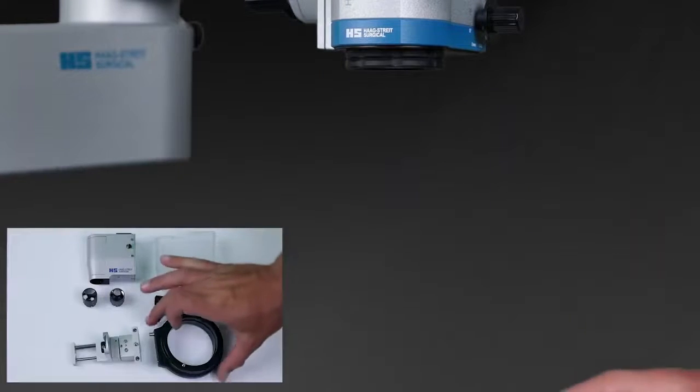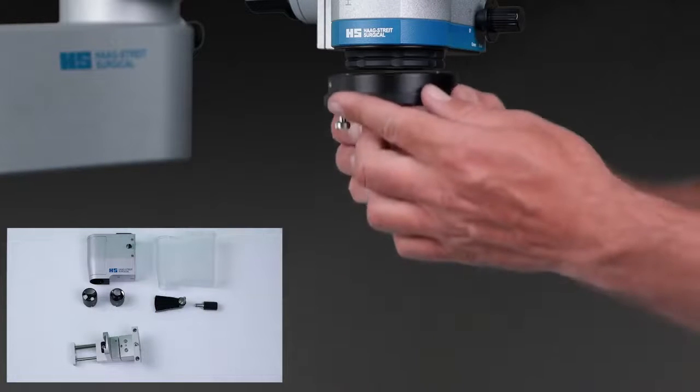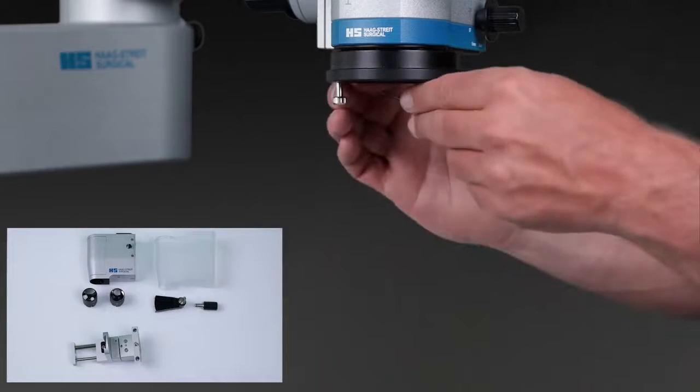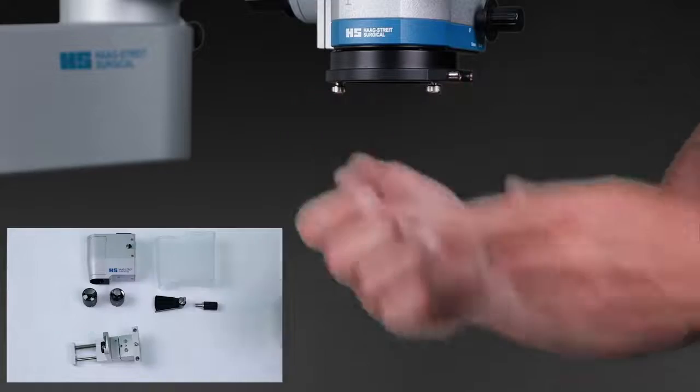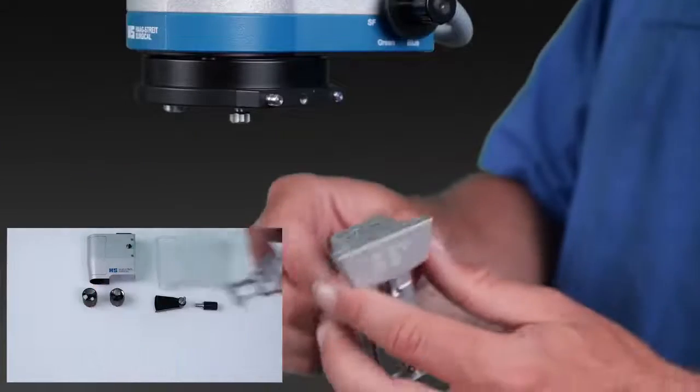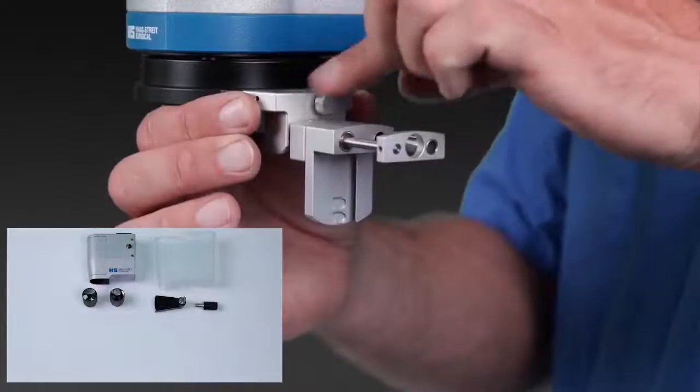The installation is quite simple. The mounting ring is connected to the microscope via two screws. Then the suspension is attached to the adapter via one screw.